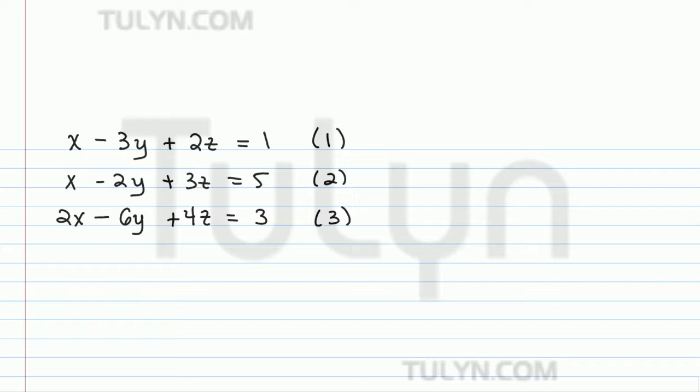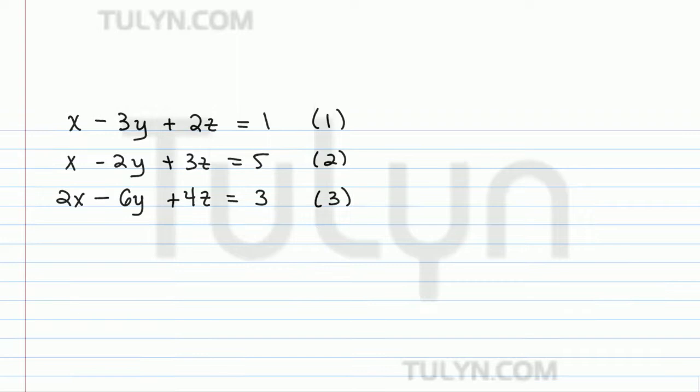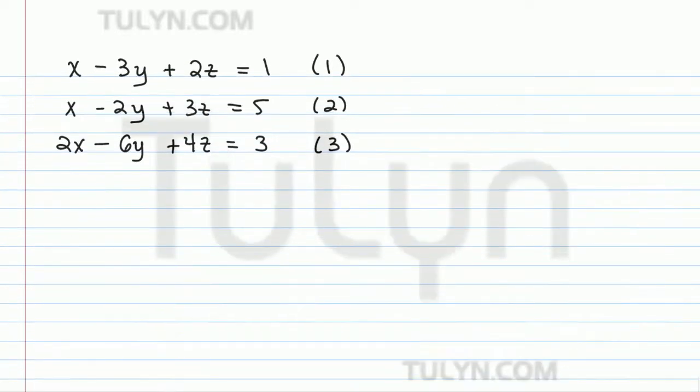That's just to keep organization, to let you know where you're at. Now the goal is to first pick the variable that we want to get rid of, and usually the easiest variable is the one with the least coefficients. So it looks like x might be the easiest to get rid of in this case. Now that we've decided that, what we do is pick two different pairs of equations and get rid of the x variable in both.